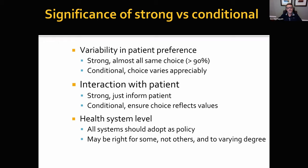GRADE uses a binary approach to strength of recommendations: strong and conditional. We can be very specific about what each means. A strong recommendation means all or almost all fully informed patients would make the same choice. A conditional recommendation means that fully informed patients, because of different values and preferences, would make different choices. This has implications for the clinician-patient interaction: for a strong recommendation, an extensive values and preferences discussion is unnecessary, but for a conditional recommendation you need shared decision making to reflect the individual patient's values.